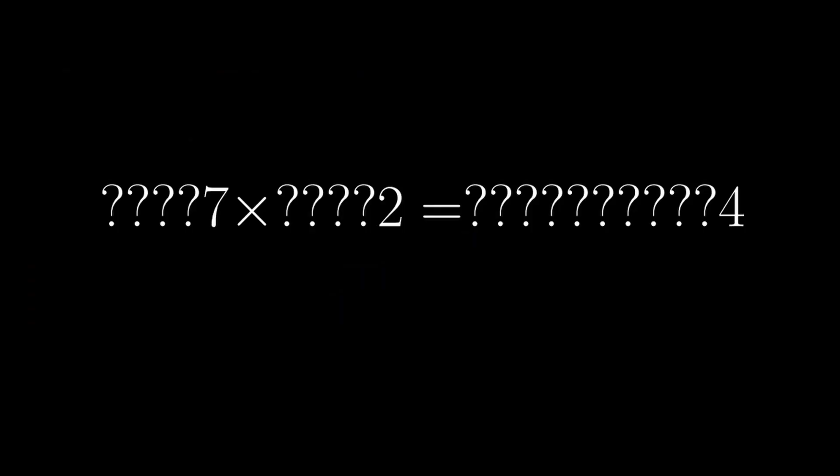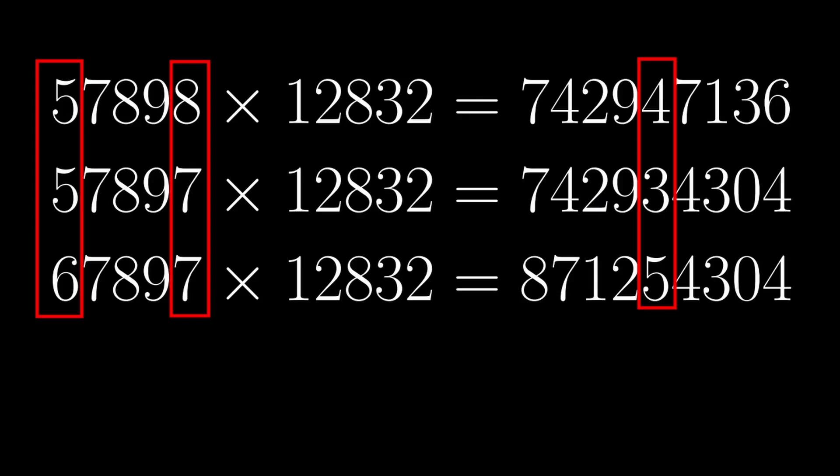Statistically, it knows that seeing two numbers end with a 7 and a 2 with a times sign in between is going to result in a number that ends with a 4. Similarly, it can make statistical observations for the start of two numbers multiplied together, but the middle digits of a product depend on all of the digits of the input, and that's going to be a lot more complicated. It can't get away with just simple statistical observations.